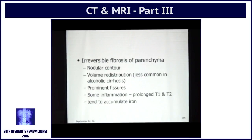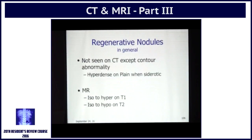So what is cirrhosis? It is irreversible fibrosis, which results in nodular contour, volume redistribution, prominent fissures, some inflammation — and you will see that in some examples as I show you. Cirrhotics also tend to accumulate iron. The commonest focal lesion,